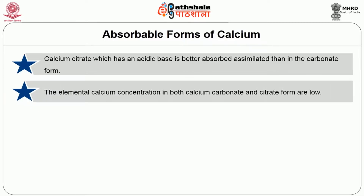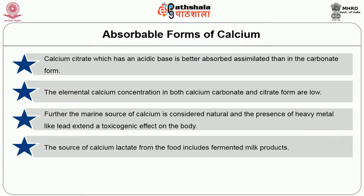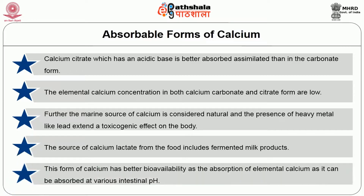The skeletal calcium concentration in both calcium carbonate and citrate forms are low. The marine source of calcium is considered natural, but the presence of heavy metals like lead extends a toxicogenic effect on the body. Calcium lactate from fermented milk products like curd and yogurt has better bioavailability, as elemental calcium can be absorbed at various intestinal pH levels.